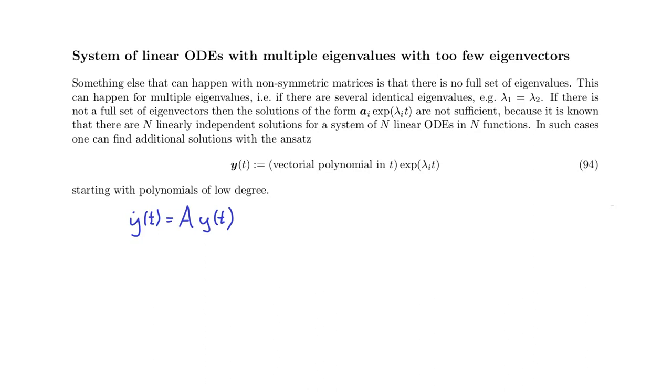Things become more complicated if the eigenvalues and eigenvectors of matrix A are complex. We have seen that in that case the solution would include spirals and circles or ellipses.